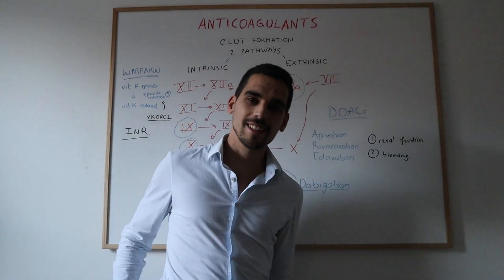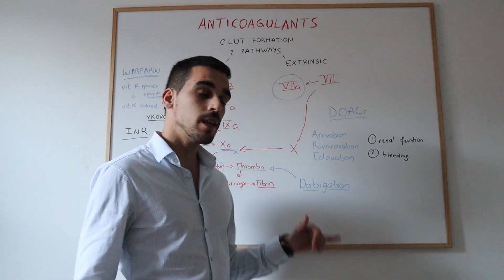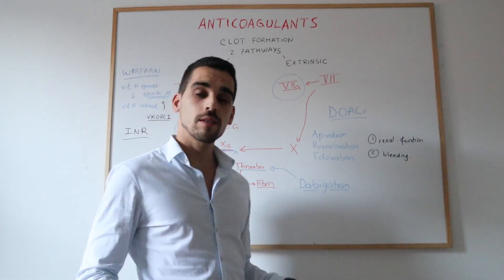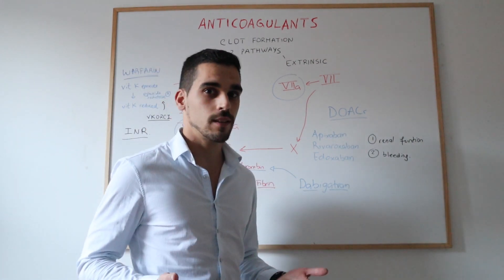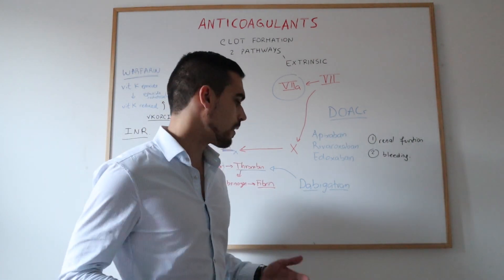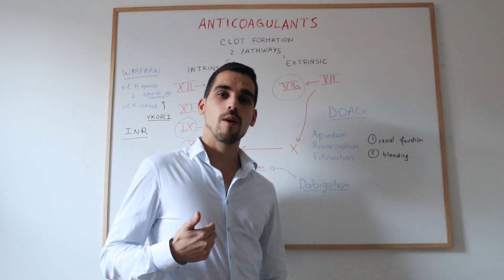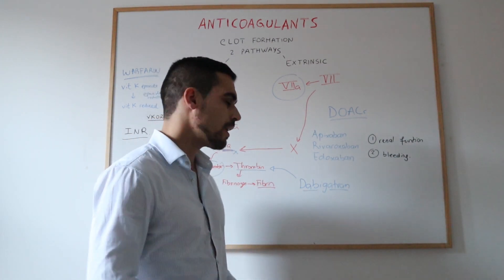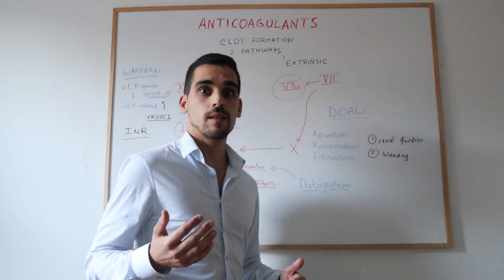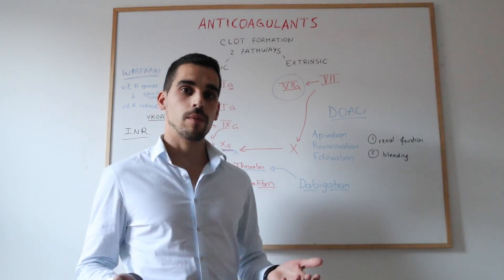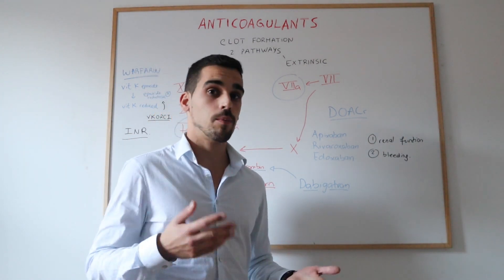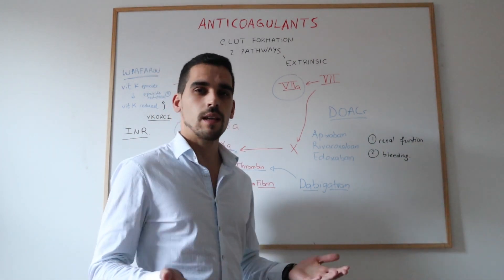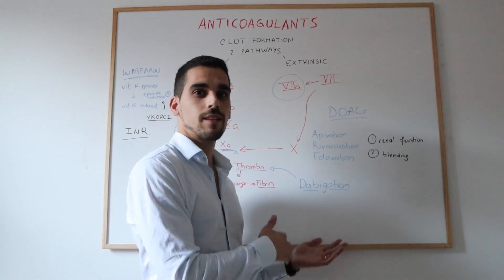One last important fact: dabigatran is a prodrug, meaning it is not orally active on its own. Once taken, it must be hydrolyzed in the liver to become active. Therefore, in patients with hepatic impairment, dabigatran should not be given, as liver impairment will have implications for its activation.